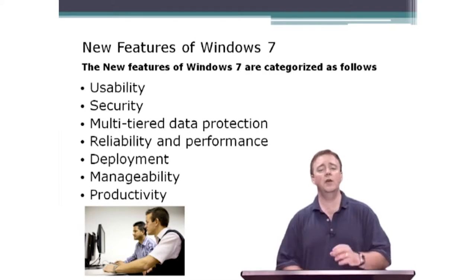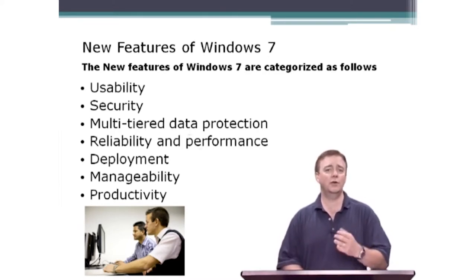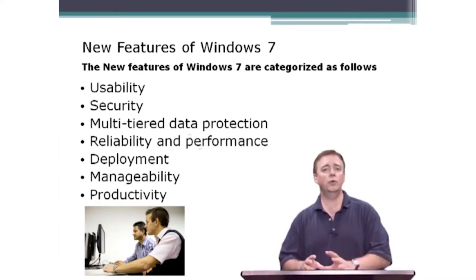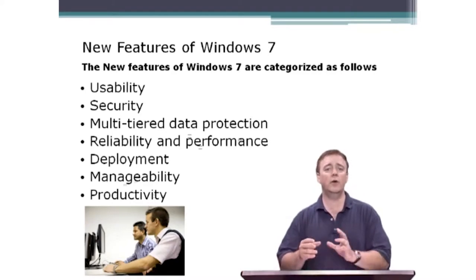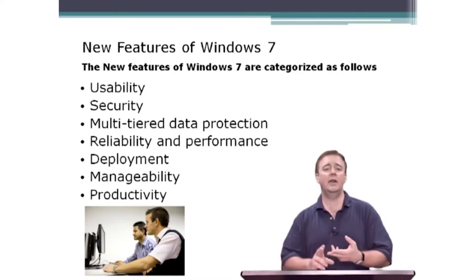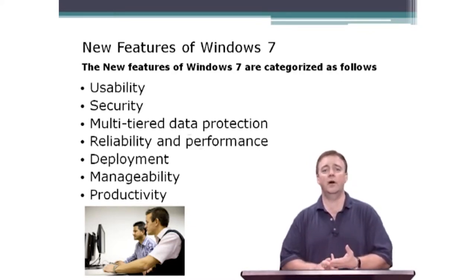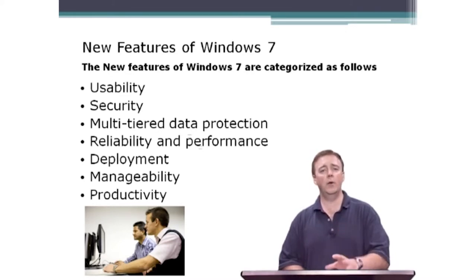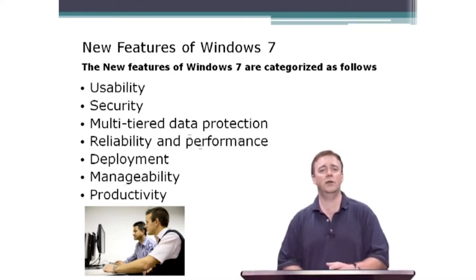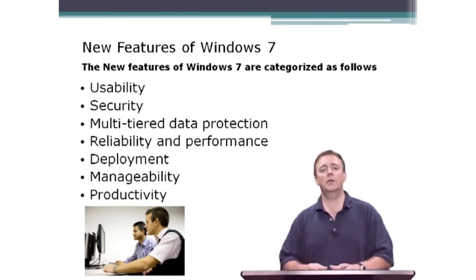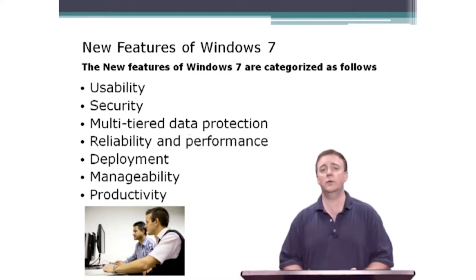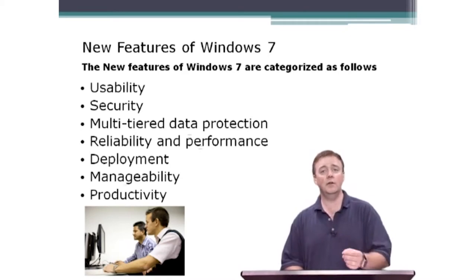With reliability and performance, we see that applications can run better and faster and can recover from a deadlock situation. We have better tools to look at how it's working and running through scripting capabilities. Administrators can create their own customized tools to help analyze what's wrong with an application or fine-tune the environment. Deployment options through WIM and image distribution make it easy to deploy hundreds of Windows 7 workstations in a single day. Manageability and productivity have all seen key improvements in Windows 7.